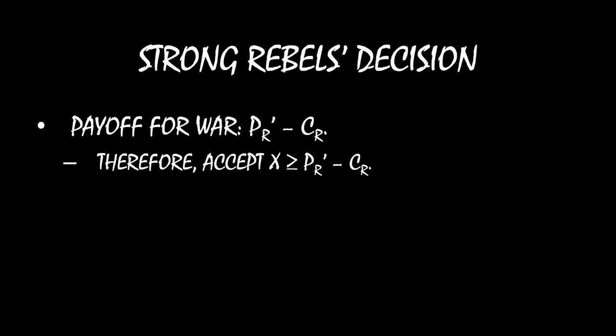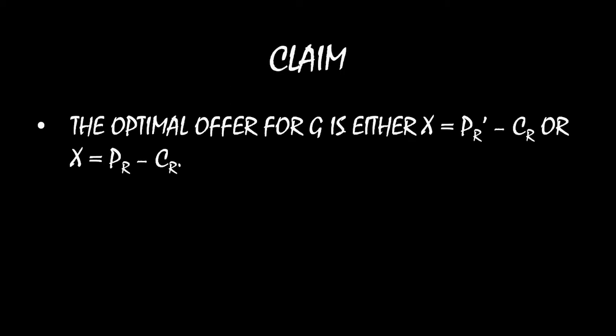It's a similar situation with the strong rebels. The only difference is that the strong rebels win with probability PR prime, so their payoff for war is PR prime minus CR, which means they accept if X is greater than or equal to PR prime minus CR. That takes care of the rebels' decision — now we need to think about the government's decision.